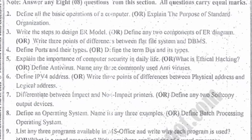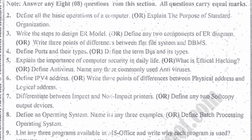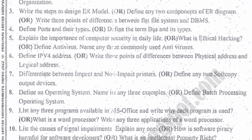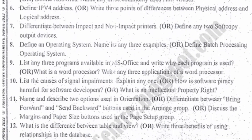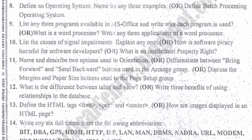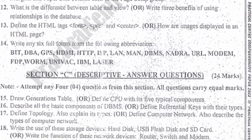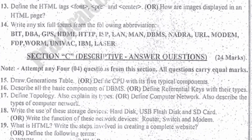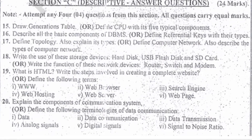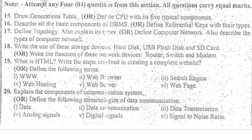You have to complete the paper in 3 hours. The total questions are 30, from which you have to answer 8 questions, and each question is 3 marks. In Section C, you have a total of 24 marks. Attempt any 4 questions from this section — there are 6 questions in Section C, and each question is 6 marks.